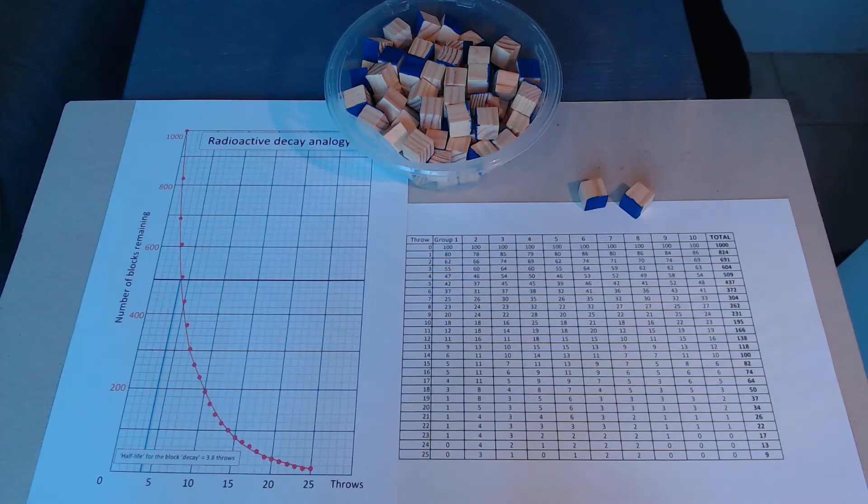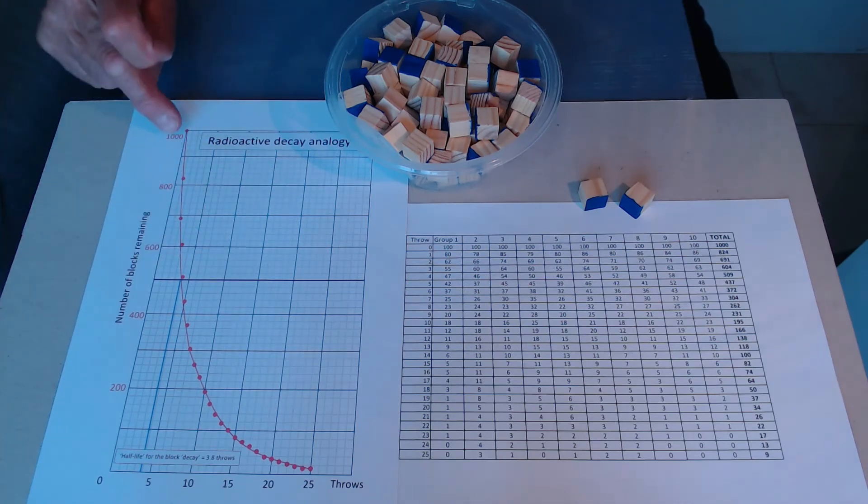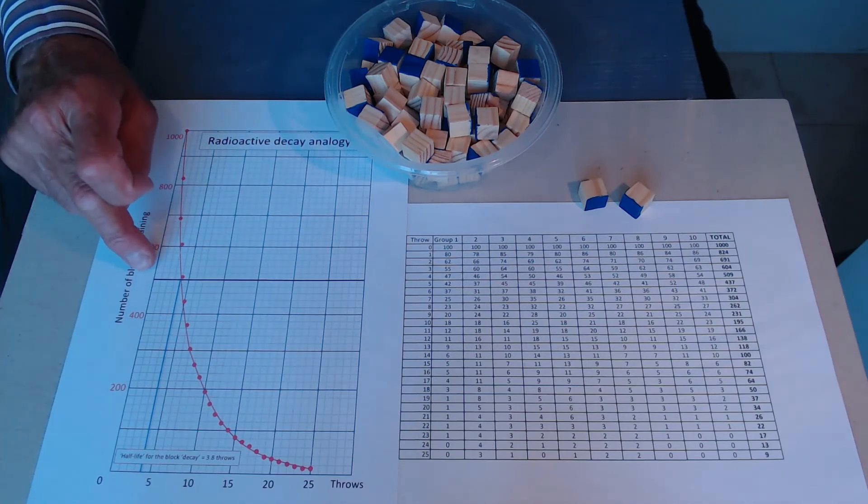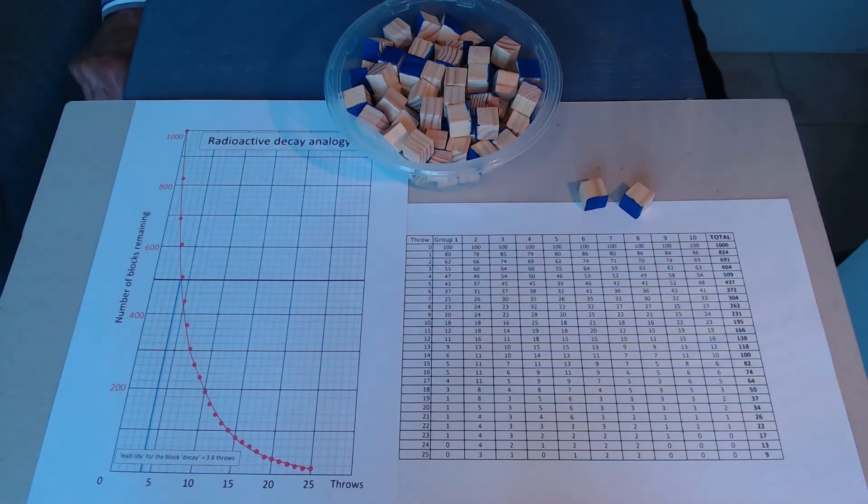How does this relate to radioactive decay? There's a thing in radioactivity called the half-life. It's the time for the activity to fall to half the original number, or in our experiment, the number of throws for our blocks to fall to half. We started with a thousand, there is five hundred, and the half-life for the decay is three point eight throws.